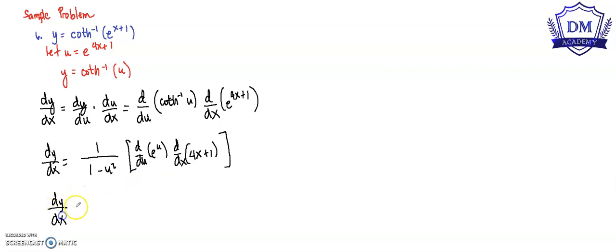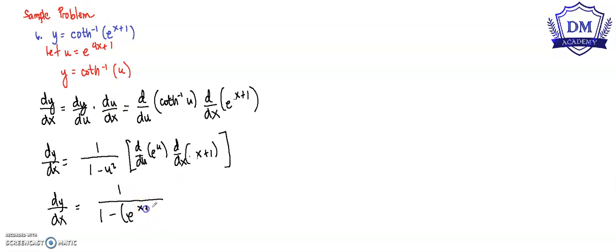So dy over dx is equal to 1 over 1 minus the square of u — that is e raised to x plus 1 — multiplied by e raised to u, then multiplied by the derivative of x plus 1, which is 1.